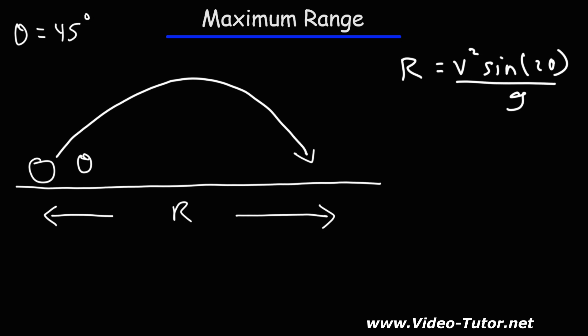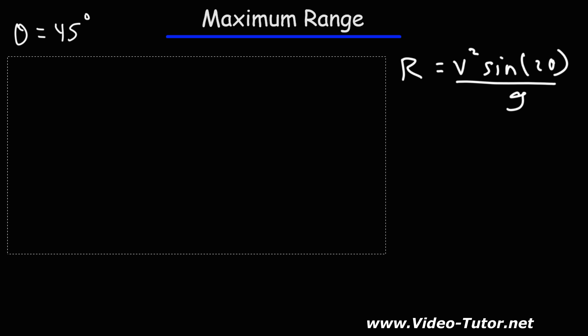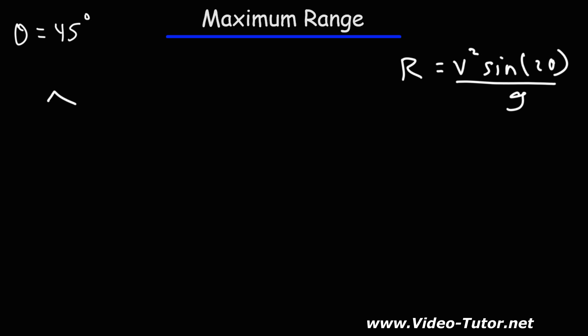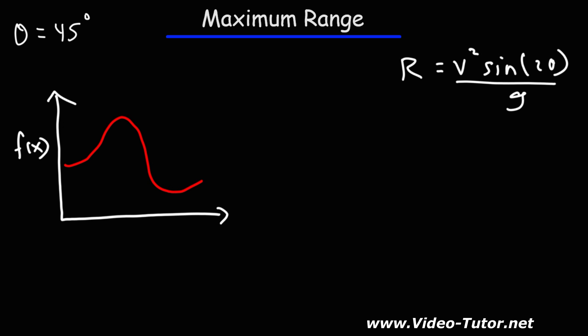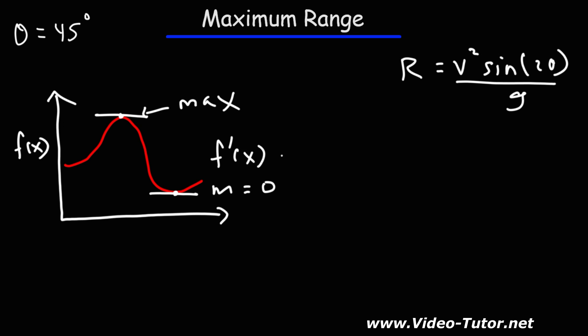Just a quick recap of some lessons in calculus — let's say we have some function f of x and it's a curve. At a certain point we have a local maximum. Whenever you have a local minimum or local maximum, at that point you have a horizontal tangent. At the horizontal tangent the slope is 0, and the derivative function gives you the instantaneous slope at any point along the curve. So the derivative of f of x will be 0 — that's how we find the point at which a maximum occurs. We find the first derivative, set it equal to 0, and solve for the variable.